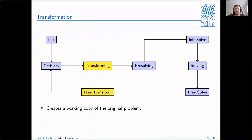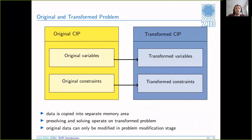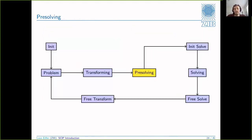Now comes something maybe not so trivial: the problem transformation stage. SCIP will never actually work on the original problem - everything is copied over to the so-called transformed problem. Afterwards SCIP only works on the transformed CIP, for example all pre-solving steps are done on the transformed CIP, and the original data structure will not be modified during the solve at all. After you're done, you will go back to the original problem with the optimal solution and verify that it's actually feasible there. This guarantees that you do not somehow change your problem into something completely different and break something.